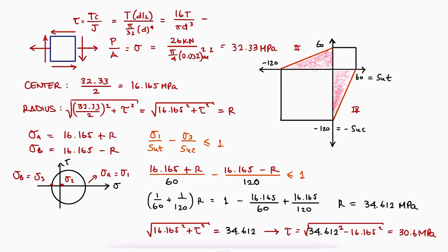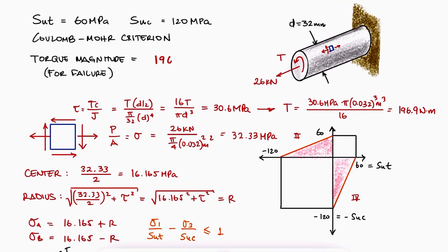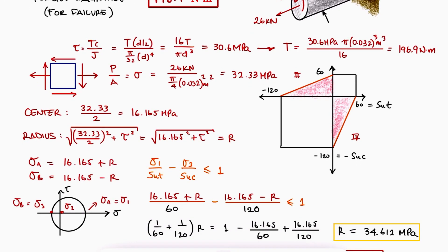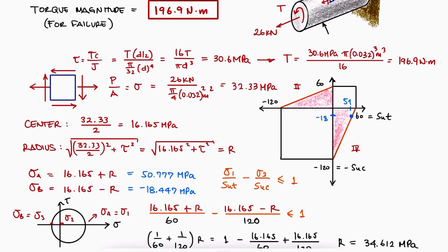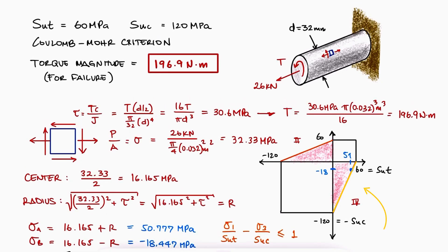Since the shearing stress tau depends on the torque T, we can solve for T to find the value of the torque for which this structure would fail. With that value of the radius that we find earlier, we can find the two in-plane principal stresses to confirm that the principal stress state location would be located exactly on the stress envelope boundary. This would only occur if the torque is in fact 196.9 Nm.